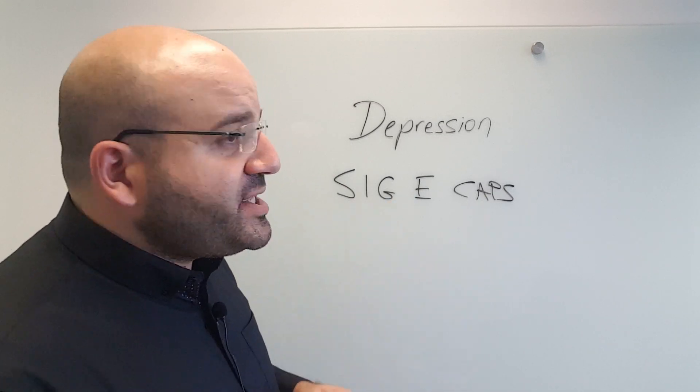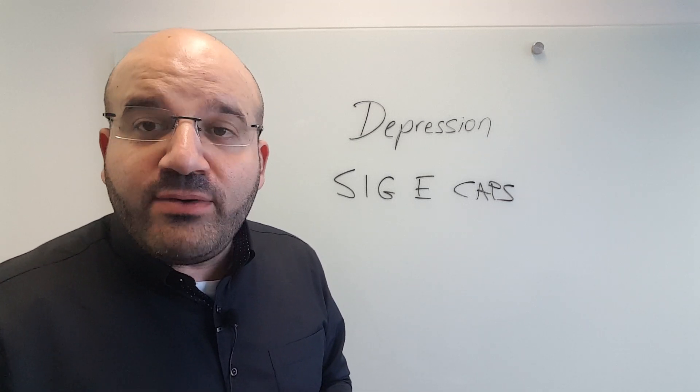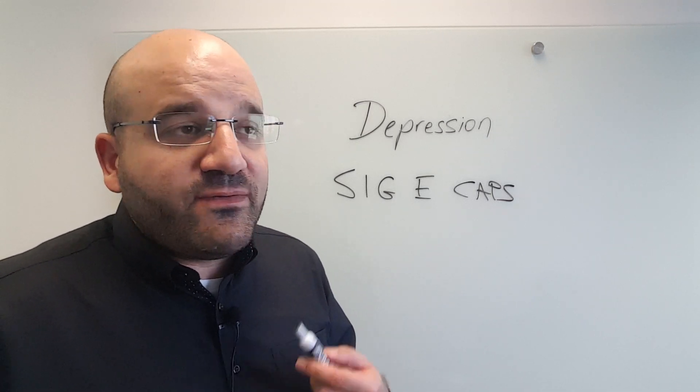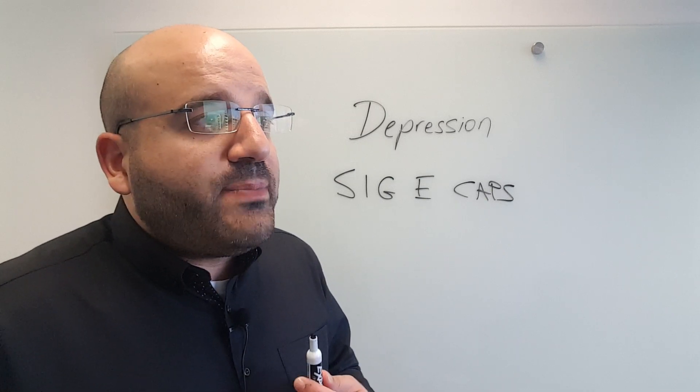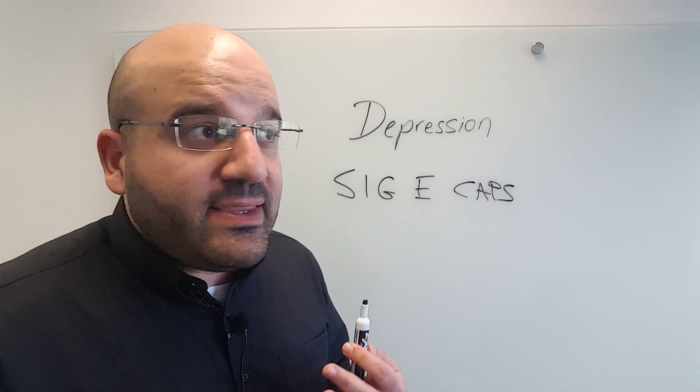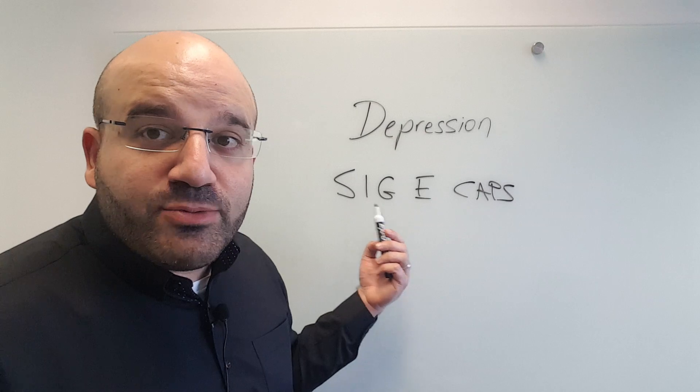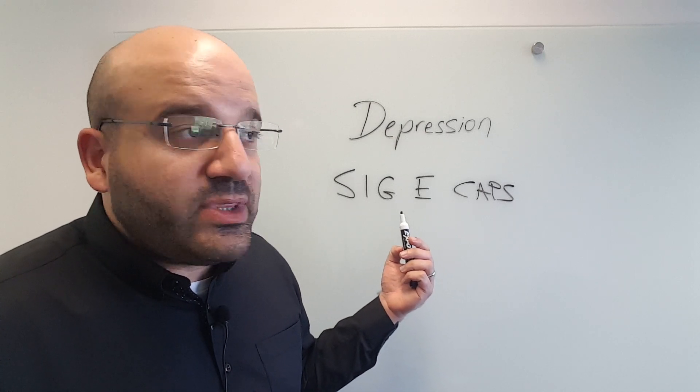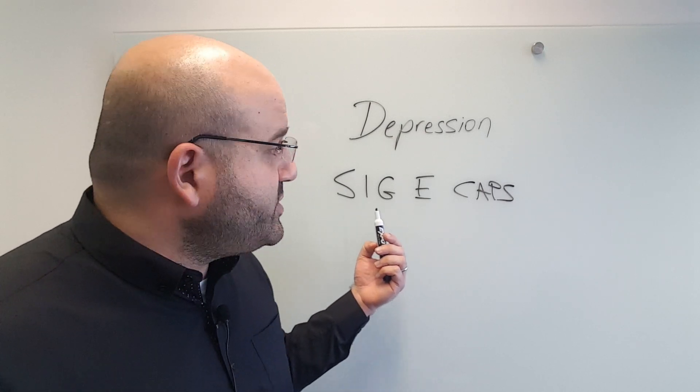The G stands for guilt, especially in more severe forms of depression. There can be persistent feelings of guilt, of pathological badness. There can be feelings of punishment, that I'm being punished for something when the individual is in a depressive episode.